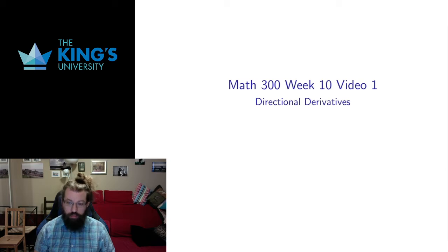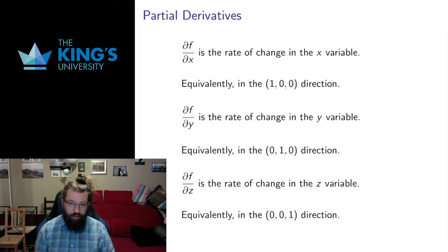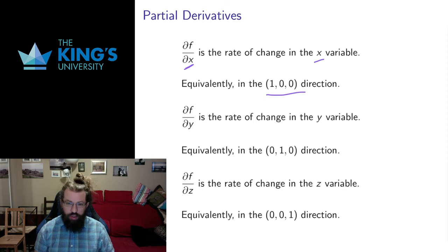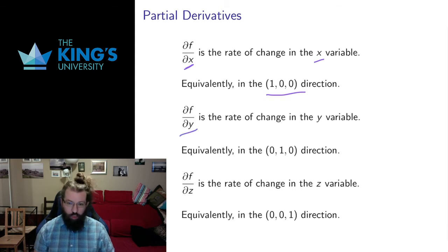We're going to start with directional derivatives today. We have the notion of a partial derivative as the rate of change in a particular variable. If I move in a variable I can think of that as moving in an axis direction in space. So if I'm working in R3, the partial ∂f/∂x is change in the x variable, but equivalently change moving in the x direction. Likewise change in y is the same as moving in the y direction, and change in z is the same as moving in the z direction.